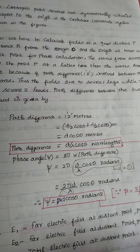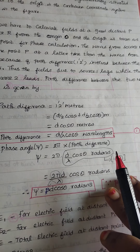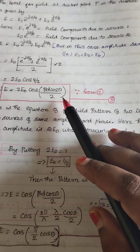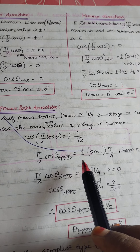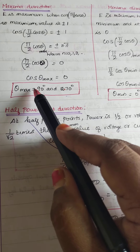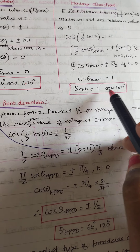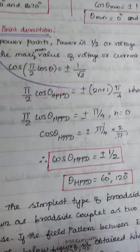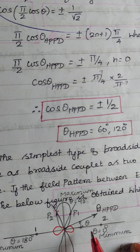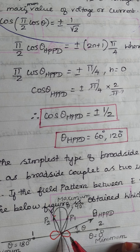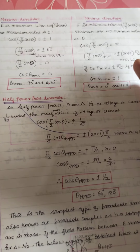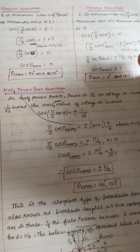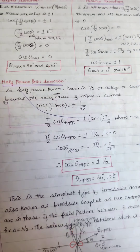So for the broadside array: first we found the path difference, second the phase angle, third the total electric field, and then substituting beta and d values and simplifying. Maximum radiation is in the direction of 90 degrees and 270 degrees. Minimum radiation is in the direction of 0 degrees and 180 degrees. Half power point direction is 60 degrees and 120 degrees. This is the derivation for the two point source broadside array. Please like, share, and subscribe. Thank you, students.